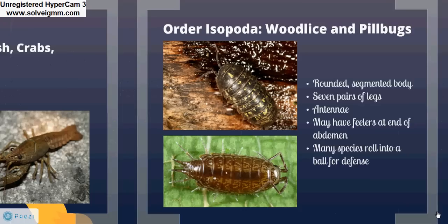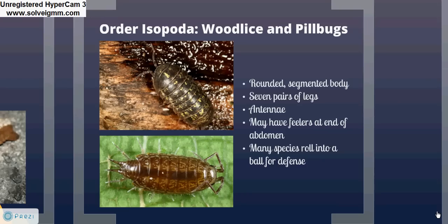Surprisingly, there are common terrestrial crustaceans. The order Isopoda consists of our common pill bugs and wood lice, found under rocks and bark and in decaying wood. These arthropods have rounded, segmented bodies with seven pairs of legs and one pair of antennae. They may have feelers at the end of their abdomen, and often roll into a ball for defense.